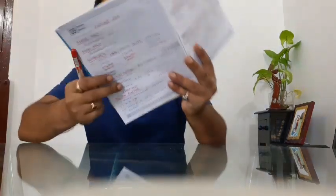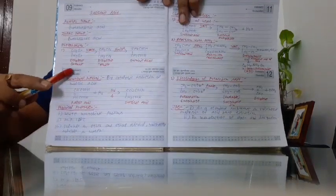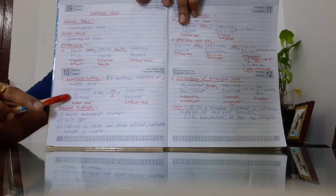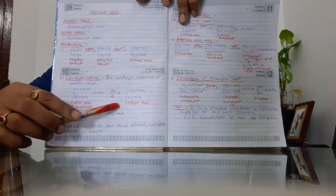The next method is basically the industrial method. In industry, they prepare succinic acid by the catalytic reduction of maleic acid. Catalytic means they have present nickel, cobalt, etc. When the catalytic reaction of maleic acid is carried out under heat, then it is converted to the succinic acid.